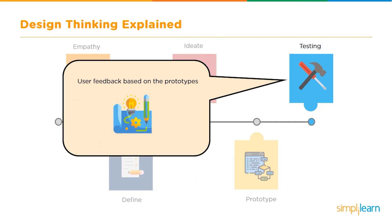Finally comes testing. This stage gives importance to user feedback based on the prototypes created. The user's feedback on the prototype stage is considered and improvements are made. That was all about the five stages in the design thinking process.